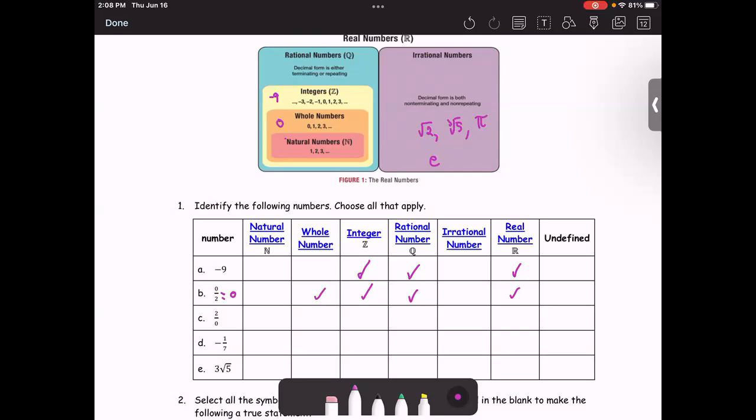Next one, 2 over 0. Any real number divided by 0 is undefined. If it is undefined, we check off the last box, so it's not either rational or irrational.